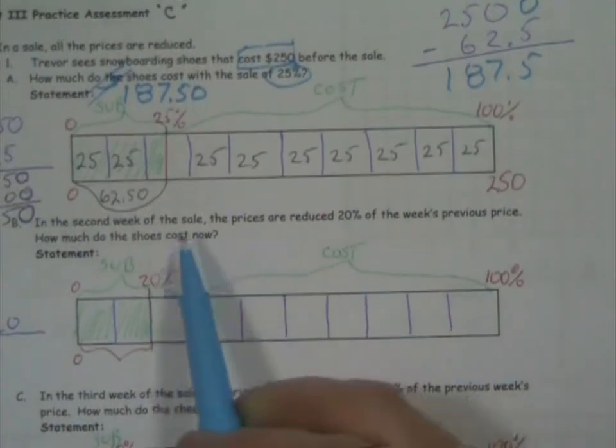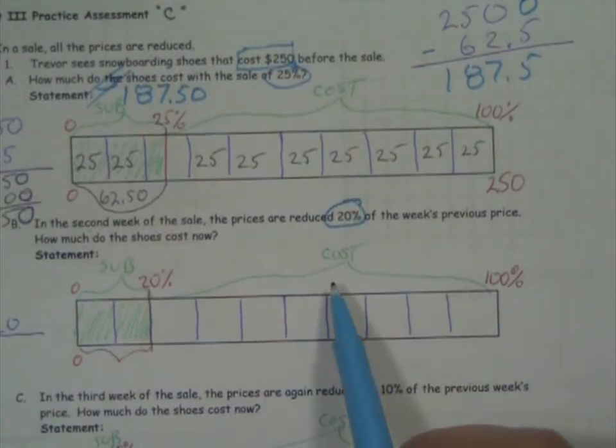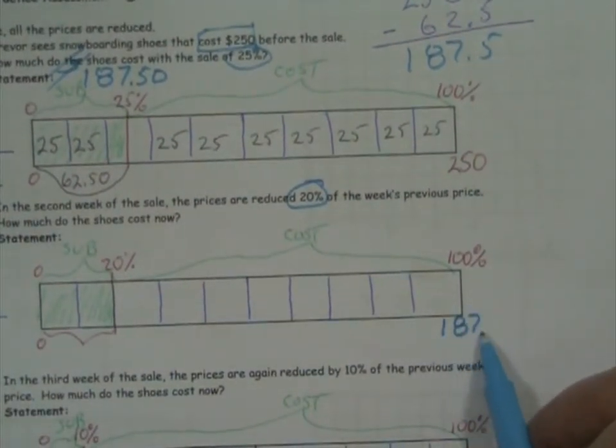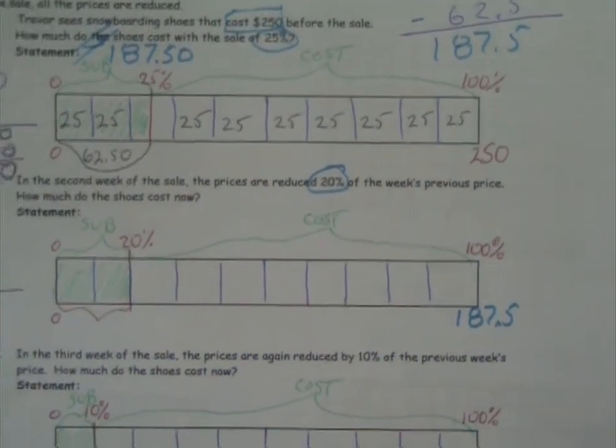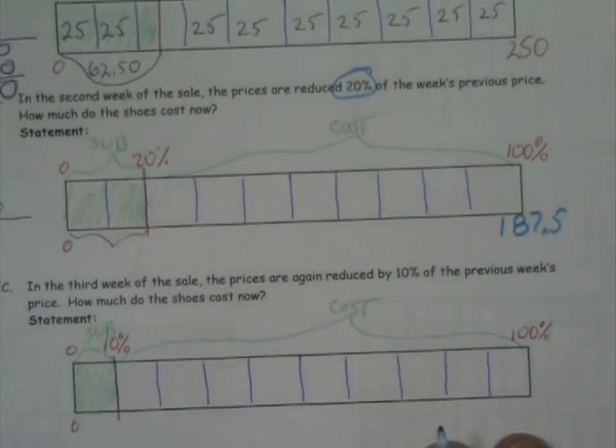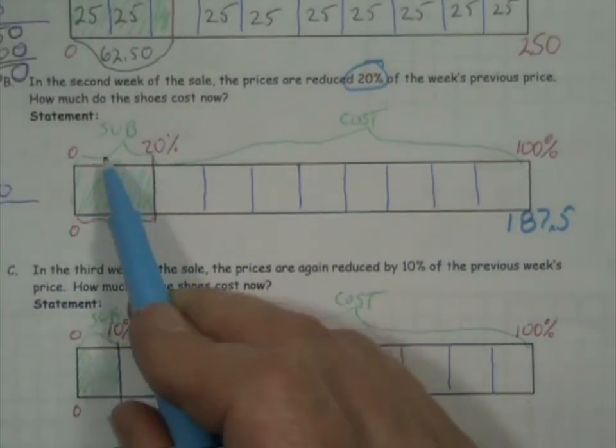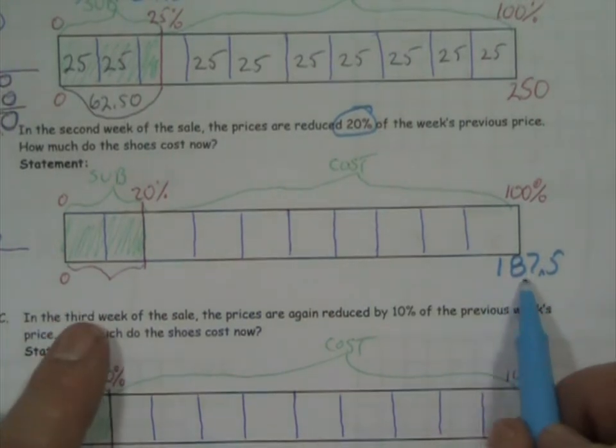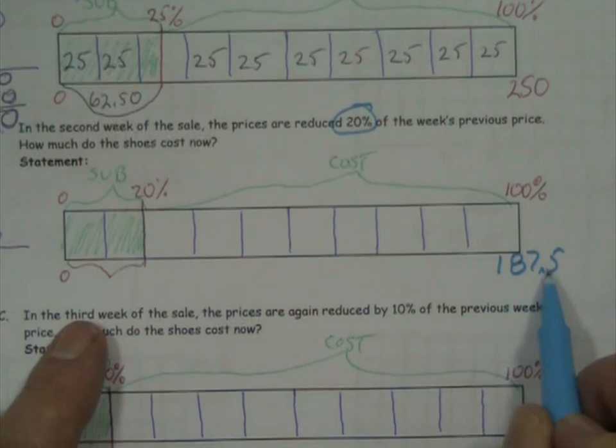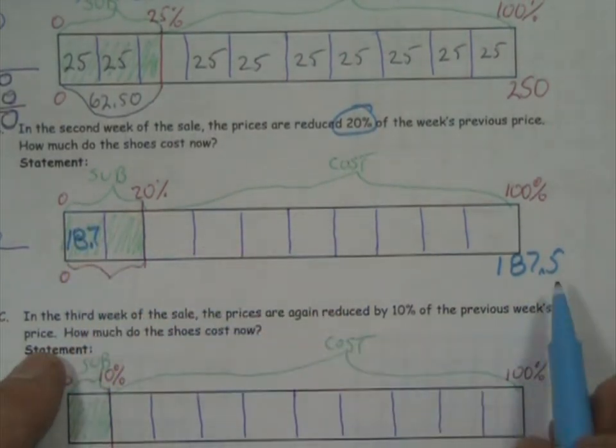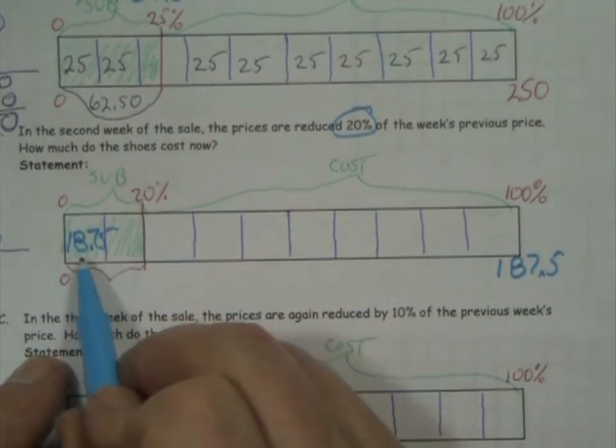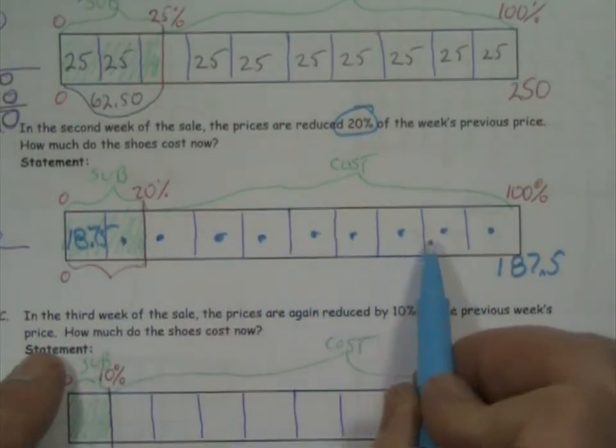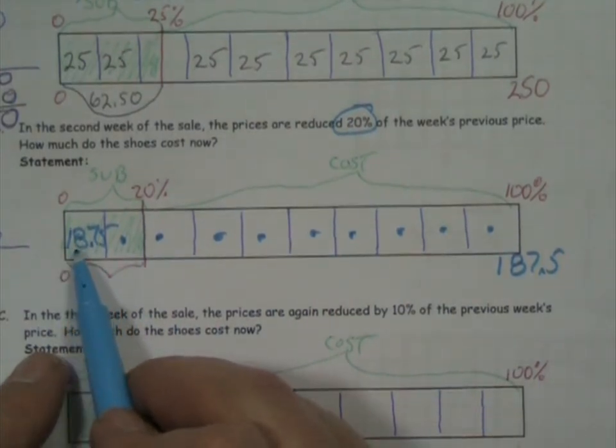Let's go to the next one. Now, the next week, it's the same thing, except now they're going to reduce it by 20% of last week's price. Well, last week's price was $187.50. I'm going to put that right here, $187.50. That was the last week's price. And now, I'm going to go ahead and take away 20%. And whatever's left is how much it's going to cost me. That means in each of these boxes right here, it's 10%. You just move the decimal over. So it's going to be $18.75. In each box, it's $18.75. I'm just going to put a dot just to represent that it's in each box. I just didn't want to have to write them all in there.